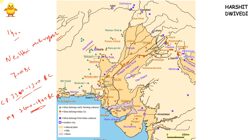There is a theory about Proto-Dravidians: when Aryans entered the Indian subcontinent, they fought with the people of the Indus Valley civilization and pushed them further south. It is said that many of these people became known as Proto-Dravidians in south India. However, there is no proof of this theory — it is just a theory.